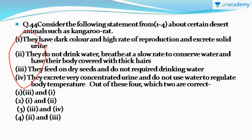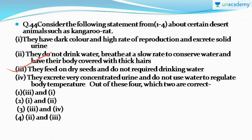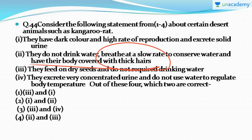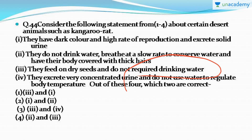Question number 44: you have to read four points and tell which two are correct with regard to a desert animal such as the kangaroo rat. The correct answer is option number four — points two and three are correct. In desert areas there is very little water, so the kangaroo rat has adaptations to survive: it does not drink water, breathes at a slow rate to conserve water, has its body covered with thick hairs, and feeds only on dry seeds.